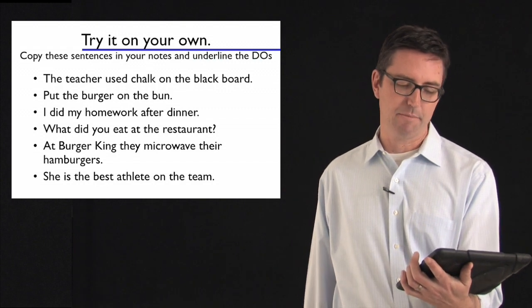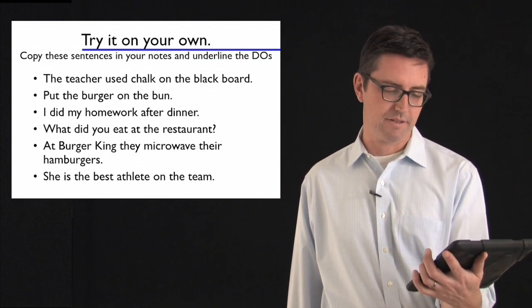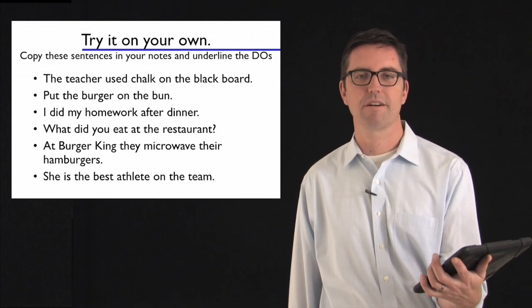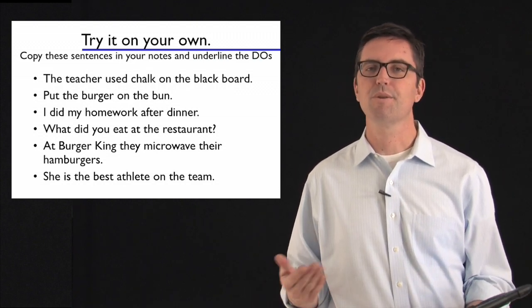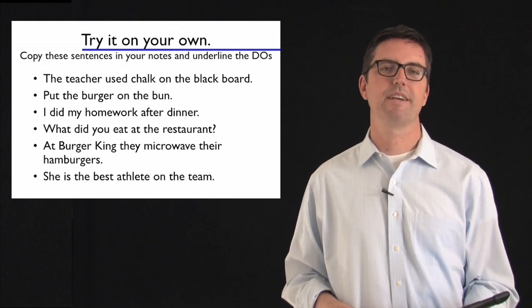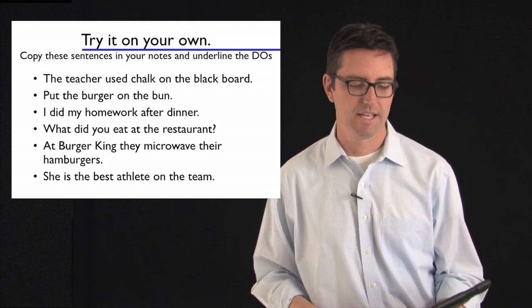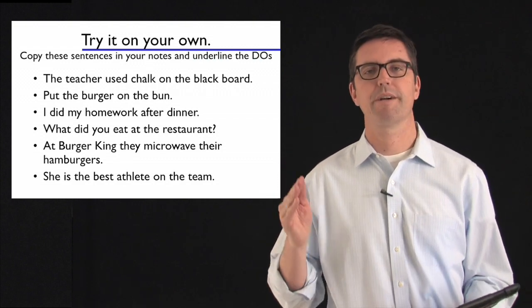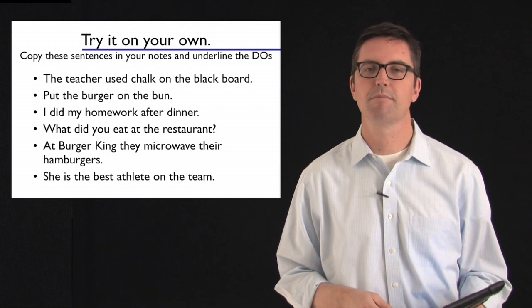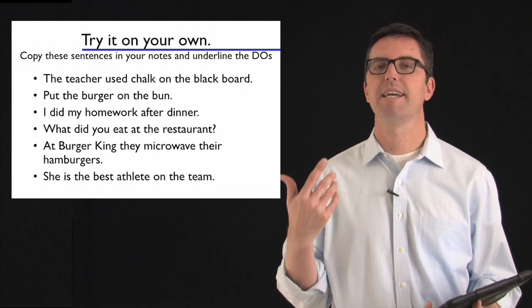And lastly, at Burger King, they microwave their hamburgers. Oh, not the last one. Second last one. At Burger King, they microwave their hamburgers. Again, let's do things in the right order so we don't make any mistakes. First thing, cross out the prep phrase at Burger King. We're left with they microwave their hamburgers. They is the subject. Microwave's the verb. What gets microwaved? Hamburgers.